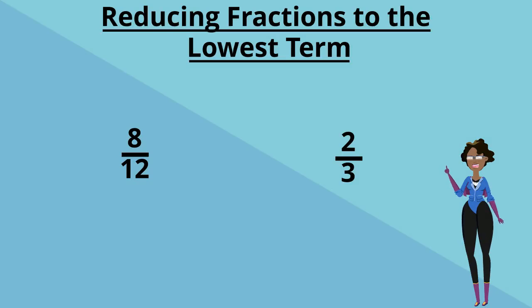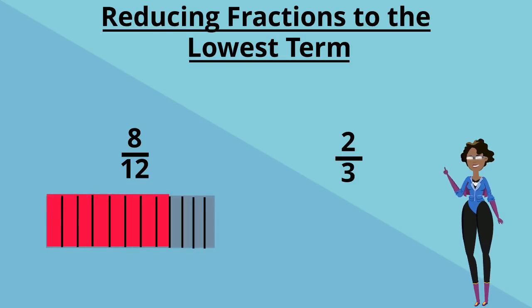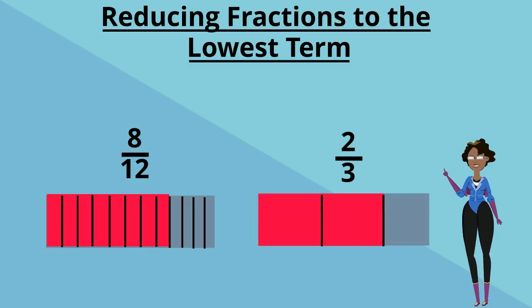Remember, reducing a fraction makes the numbers smaller, but it doesn't make the fraction's value change. If we're to show a representation of 8 twelfths, this is what it would look like. And if we're to show two-thirds, this is what it would look like. Look, they're both equal in value.